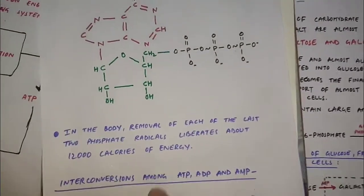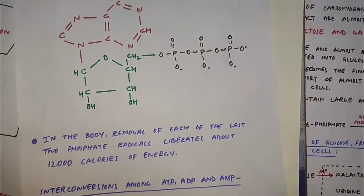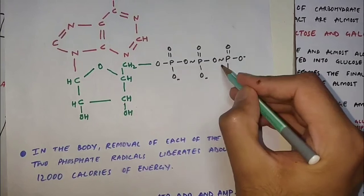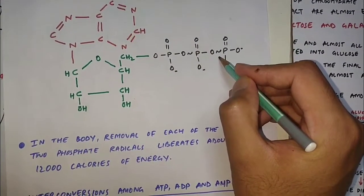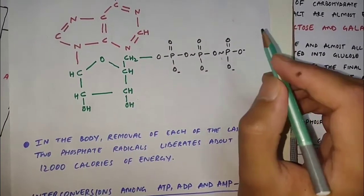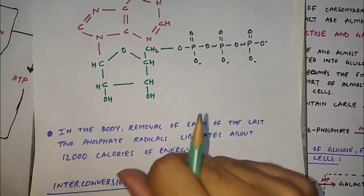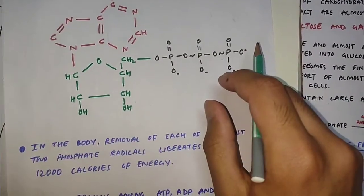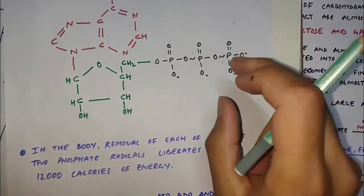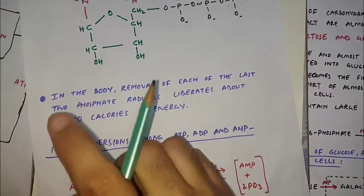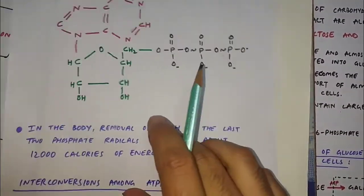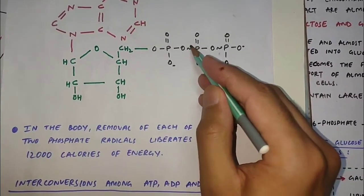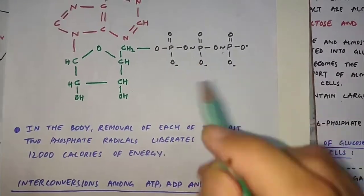After seeing the ATP structure, here are some points related to energy. Under standard conditions, when this high energy bond is broken, 7,300 calories of energy will be released. Under usual conditions of temperature and concentration of reactants — that is, in the body — removal of each of the last two phosphate radicals liberates about 12,000 calories of energy.